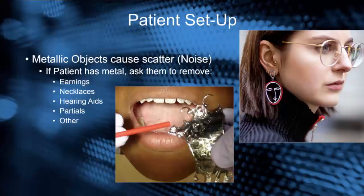For patient setup before taking the scan, it's best to remove all metallic objects, as metal increases noise in the scan. Ask the patient to remove their earrings or necklaces, and if they have hearing aids, partials, glasses, or any other metallic structures on their face. The more metal we get rid of, the cleaner the scan will be.